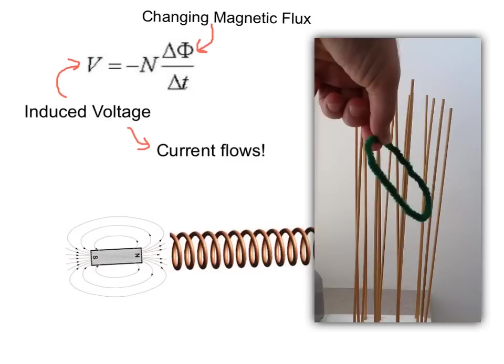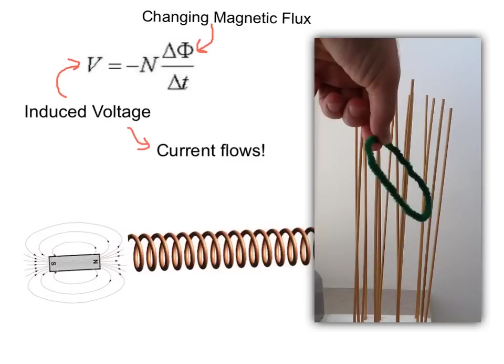And also, once we remove the magnet, it will start intercepting fewer and fewer magnetic field lines. However the magnetic flux changes, whether it increases or decreases, that will result in an induced voltage which will produce current.